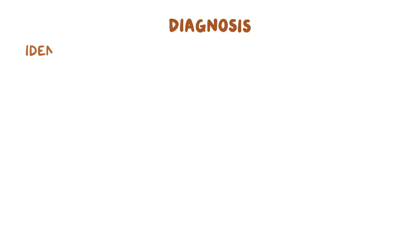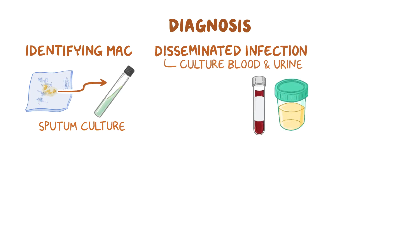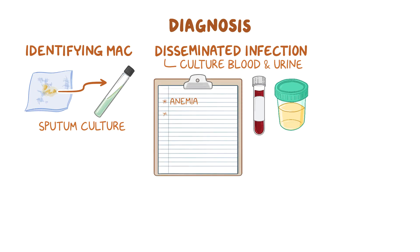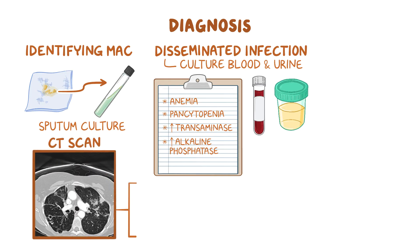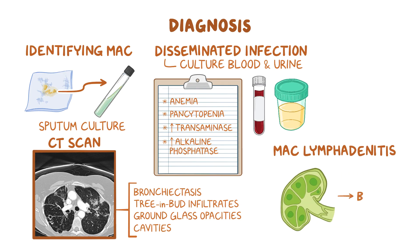Diagnosis is established by identifying MAC in the sputum using staining methods and culture. If disseminated infection is suspected, culture specimens should also include blood and urine. With disseminated infection, a complete blood count shows anemia and occasionally pancytopenia due to bone marrow suppression, and liver function tests may show high transaminase and alkaline phosphatase levels. To assess pulmonary involvement, a CT scan should be done, which may show evidence of bronchiectasis, tree-in-bud nodular infiltrates, ground glass opacities, or cavities. In cases of MAC lymphadenitis, a lymph node biopsy should be done.